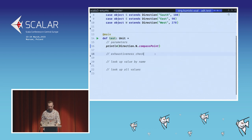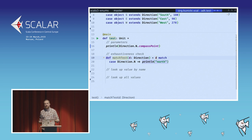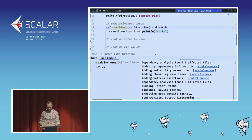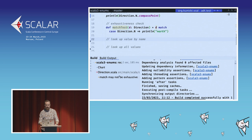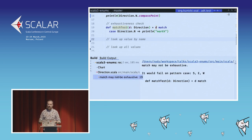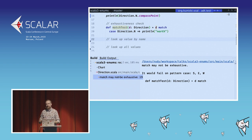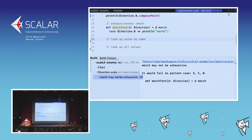For the exhaustiveness check — using a similar pattern match as before, if we compile with only one case covered, we get a compiler warning that the match might not be exhaustive. The compiler tells us exactly that we've only matched on N. So we now have compile-time safety. And if you use a compiler plugin that converts warnings to errors, your code won't even compile if you haven't covered all cases.